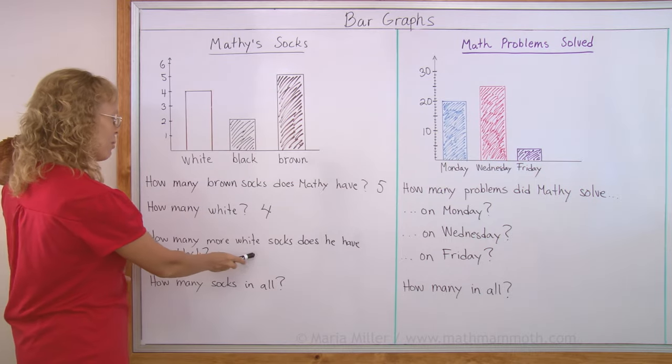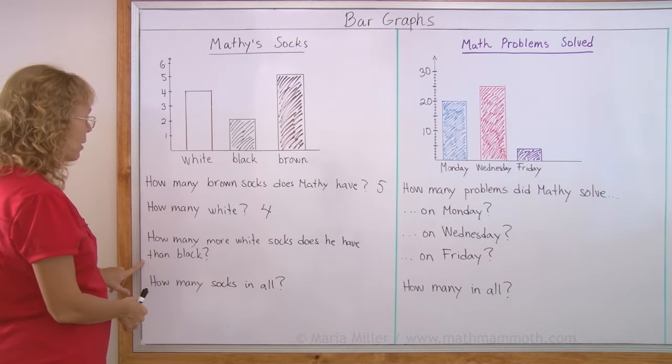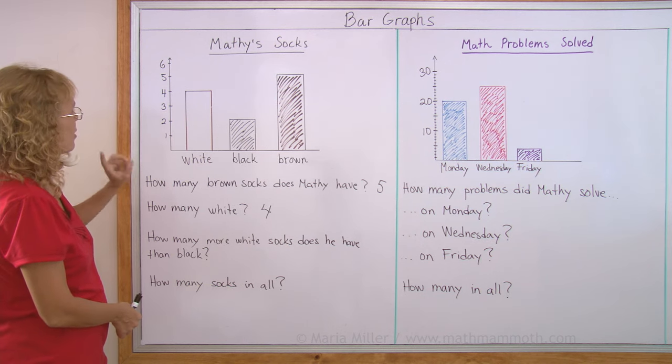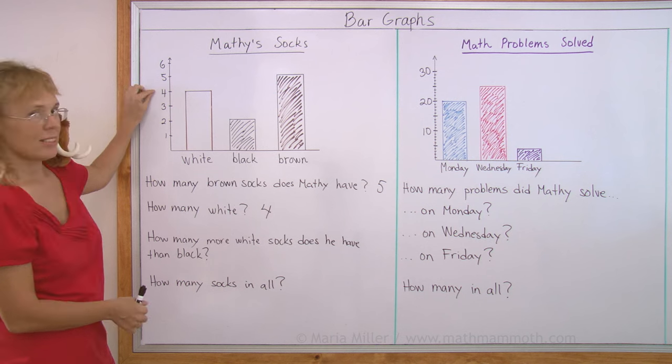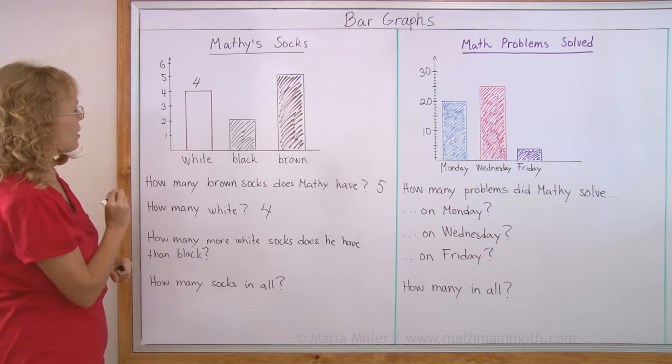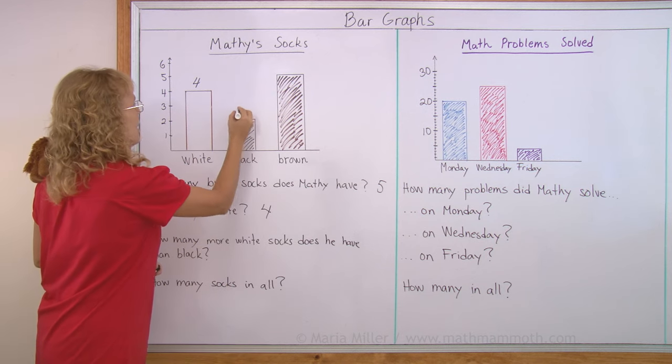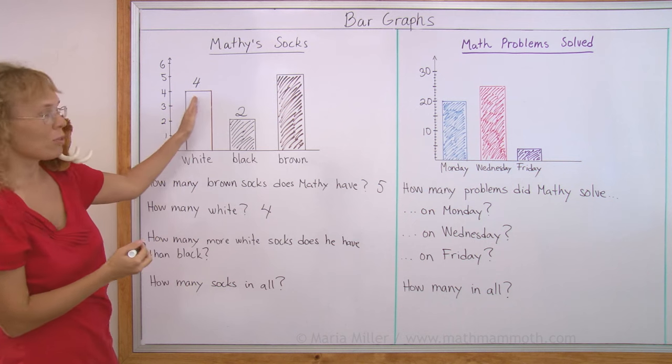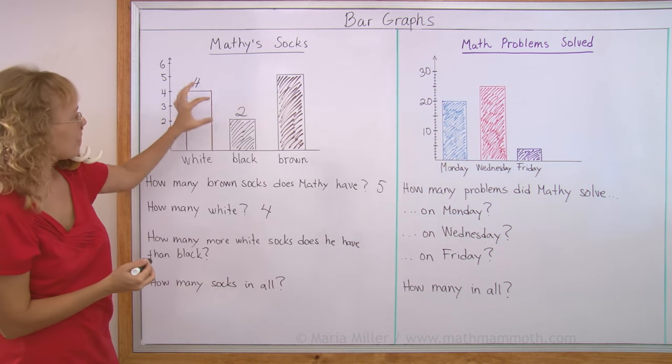How many more white socks does he have than black? How many more white than black? Okay. White are four socks. Let me write it here on top of this rectangle. And then black, he has two socks. So how many more white than black? How many more is four than two? It is two more.